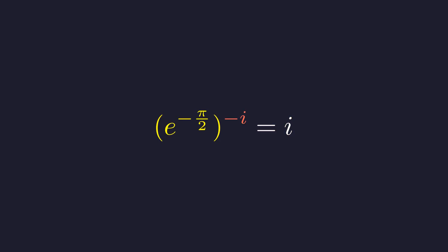Now we can use the power rule and multiply the exponents. We have negative pi over 2 times negative i. The negatives cancel and we're left with e to the power of i pi over 2. And what is this? From the very beginning of our derivation, we know this is just another way of writing i using Euler's formula.